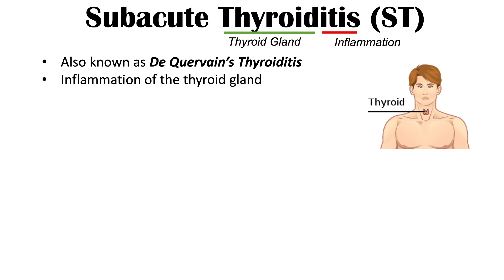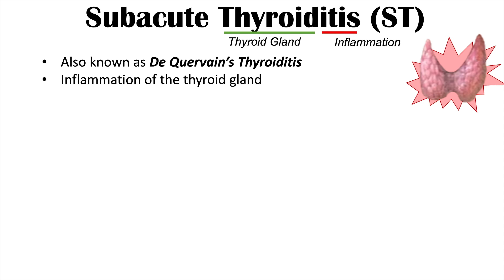So again, it's an inflammation of the thyroid gland. The thyroid gland is a small gland in the neck area located around this area here. The thyroid gland itself produces and releases thyroid hormones T3 and T4, or triiodothyronine and thyroxine. Both of those hormones are involved in metabolism, mentation, and movement.